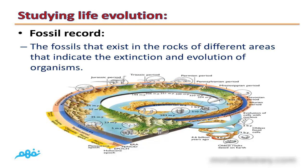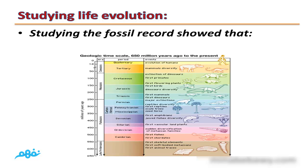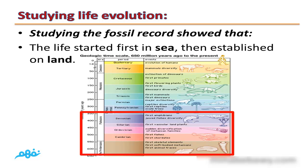Fossils that exist in rocks of different areas indicate the extinction and evolution of organisms — this is called the fossil record. Studying the fossil record showed that life started first in the sea, then established on land.